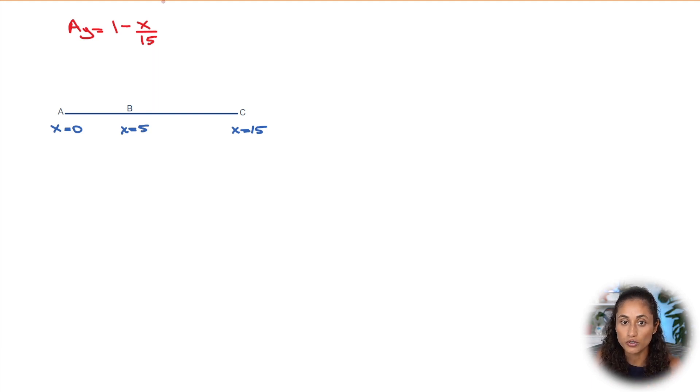So let's first start with zero. So if we do 1 minus 0 over 15, that's gonna give us 1. So we're just gonna have 1 here. Now, B, it's at 5, so we're gonna plug in here 5. So we're gonna have 1 minus 5 over 15. If you guys plug that in in your calculator, you're gonna get 2 over 3. And in the last one, if you plug in 15 here, you're gonna have 15 over 15, which is 1. And then 1 minus 1, that's gonna give you 0.